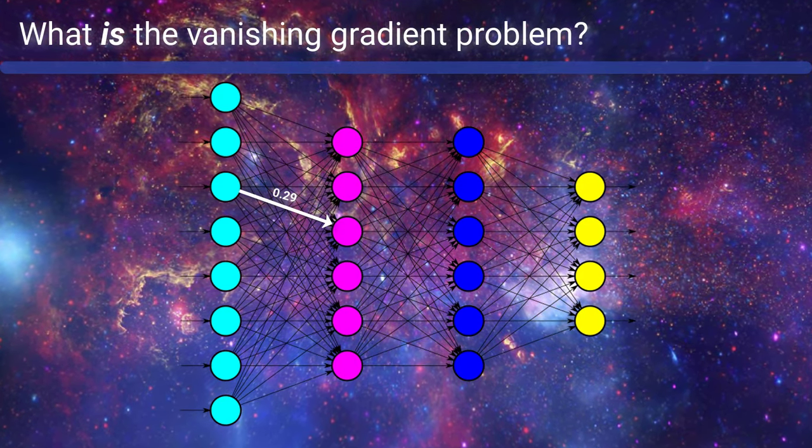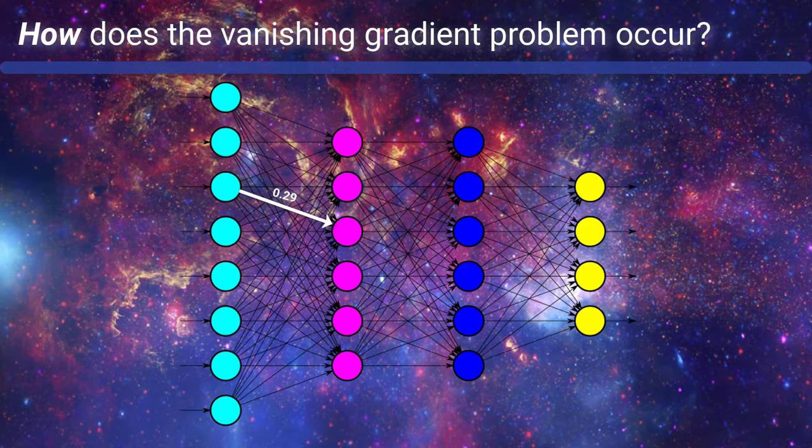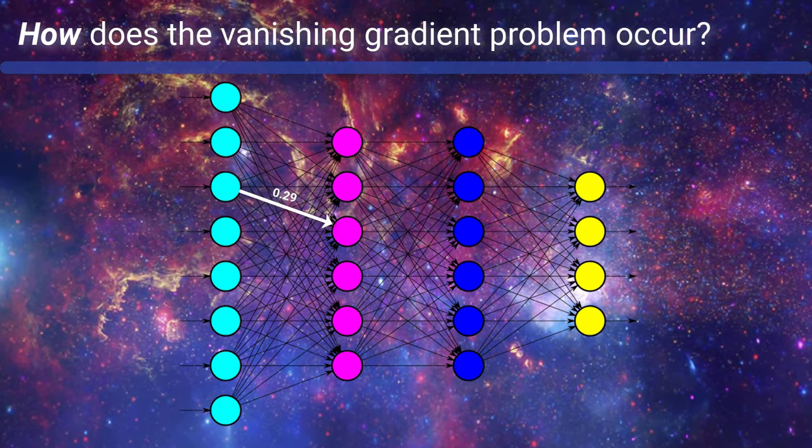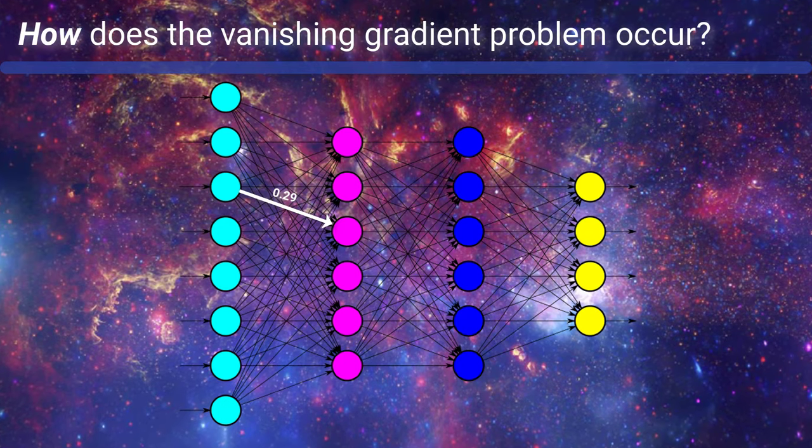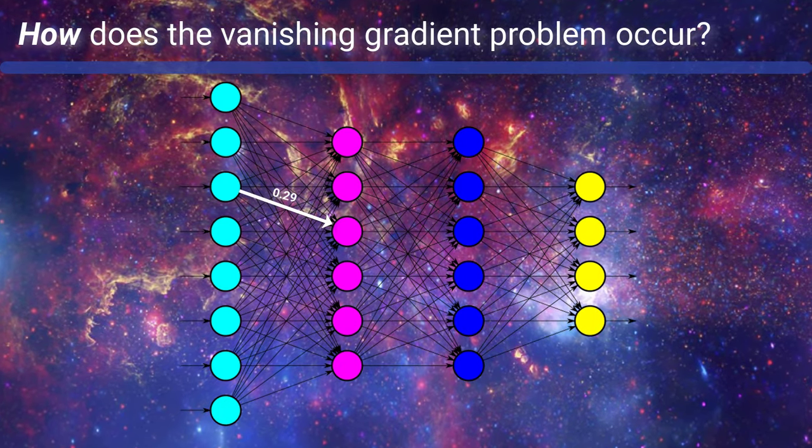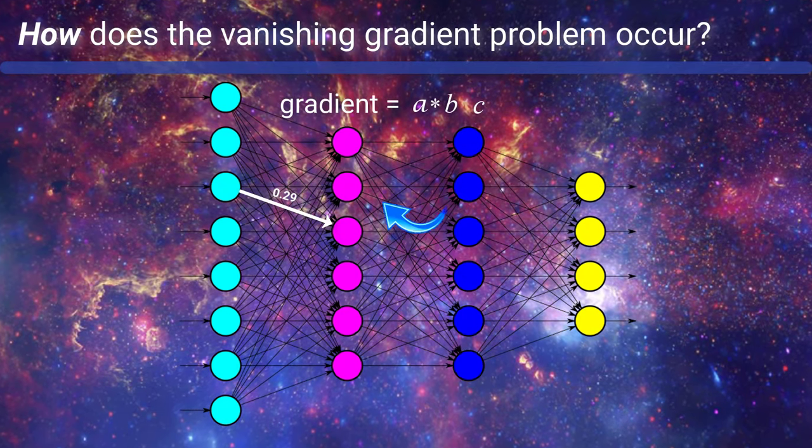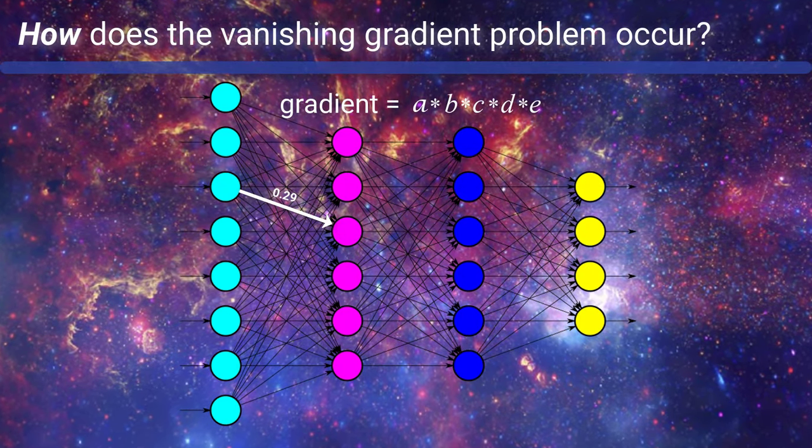So now that we know what this problem is, how exactly does this problem occur? We know from what we learned about backpropagation that the gradient of the loss with respect to any given weight is going to be the product of some derivatives that depend on components that reside later in the network. So given this...